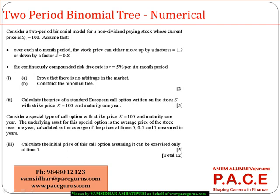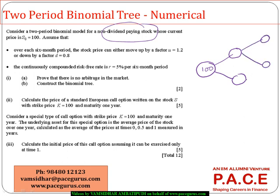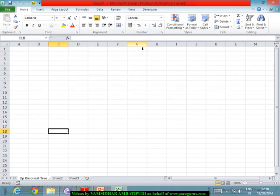Let's look at a numerical involving a two-period binomial tree. Consider a two-period binomial model for a non-dividend stock whose current stock price is 100. This generates a tree with period one and period two. Assume that over each six-month period the stock price can either move up by a factor u = 1.2 or down by a factor d = 0.8.